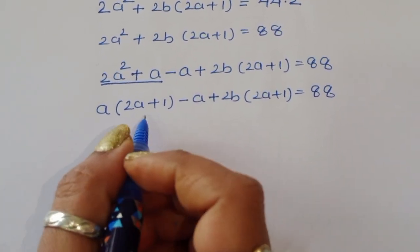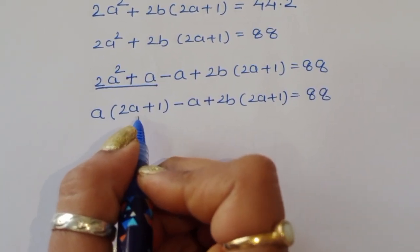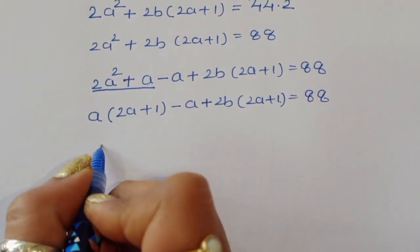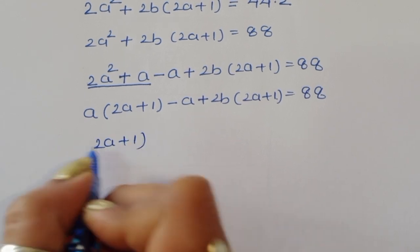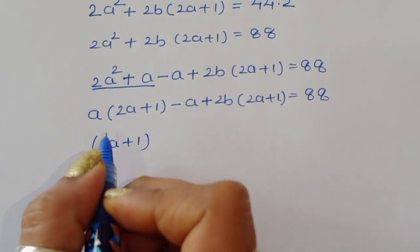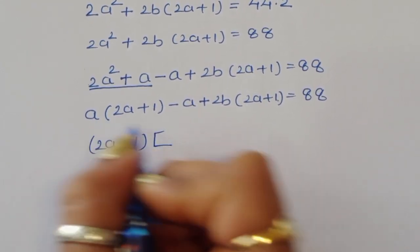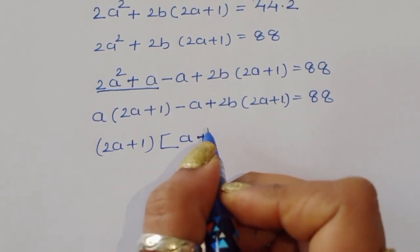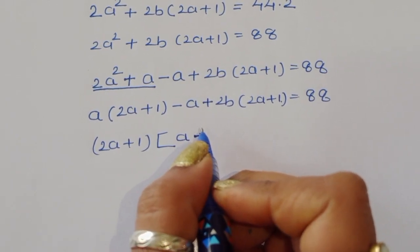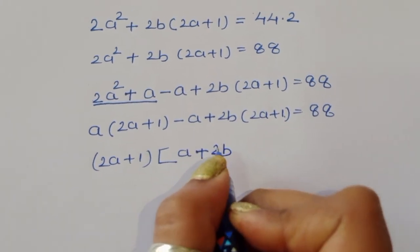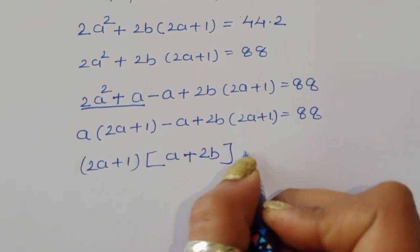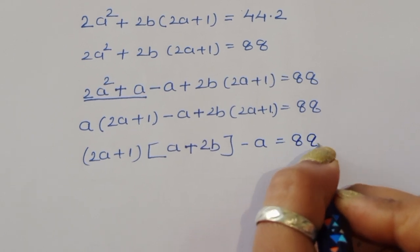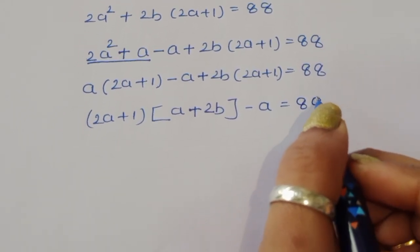Now we can take (2a + 1) common from the expression. Taking (2a + 1) common gives us (2a + 1)(a + 2b) minus a = 88.